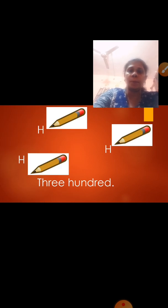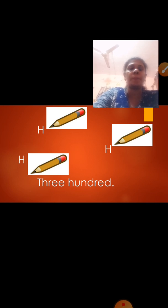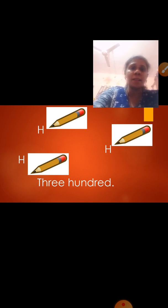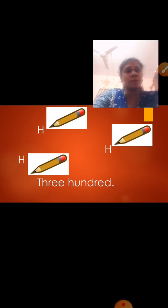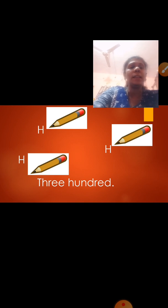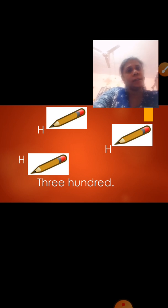Now here, what is this? Pencils. How many H are there? There are 3 H — 1, 2, and 3. H stands for 100. So how many hundreds? 300. H stands for 100, so 1 H is for 100 and 3 H is for 300, so we are having 300 pencils.